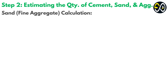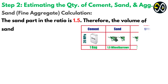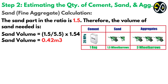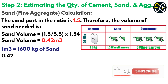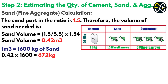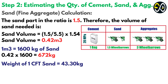Sand (fine aggregate) calculation: the sand part in the ratio is 1.5. Therefore, the volume of sand needed is: Sand volume equals 1.5 / 5.5 × 1.54, which equals 0.42 cubic metres. One cubic metre equals 1,600 kilograms of sand, so 0.42 × 1,600 equals 672 kilograms. The weight of one cubic foot of sand equals 43.30 kilograms, so 672 divided by 43.30 is approximately 16 cubic feet.